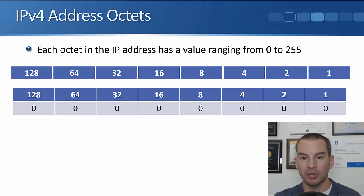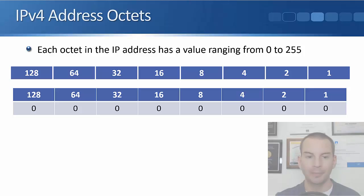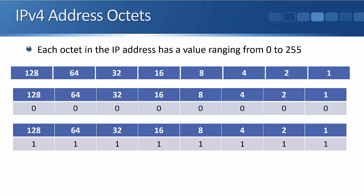The values are going to range from 0 to 255 for each octet in our IP address. If we put a 0 in on all of those bits, obviously all zeros adds up to 0.